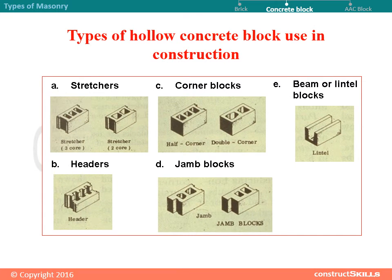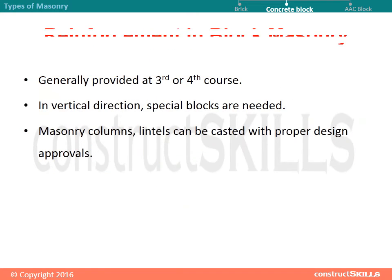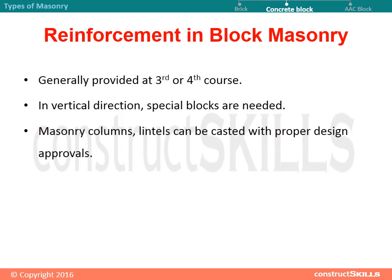Types of hollow concrete blocks used in construction include: Stretcher, Corner blocks, Beam or lintel blocks, Headers, and Jam blocks. Reinforcement in block masonry is generally provided at the 3rd or 4th course. In the vertical direction, special blocks are needed. Masonry columns and lintels can be cast with proper design approvals.